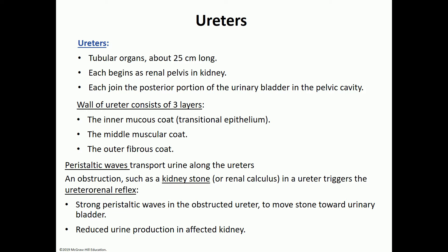There is also a middle layer made out of smooth muscles and an outer fibrous layer. Due to the smooth muscles, the ureters are able to perform a peristaltic wavy movement to allow for the passage of urine down to be stored in the bladder. If a ureter is obstructed due to a kidney stone, also known as a renal calculus, that triggers the uretero-renal reflex — a very strong peristaltic wave to try to push the stone down towards the bladder so it can be eliminated and excreted with urine.